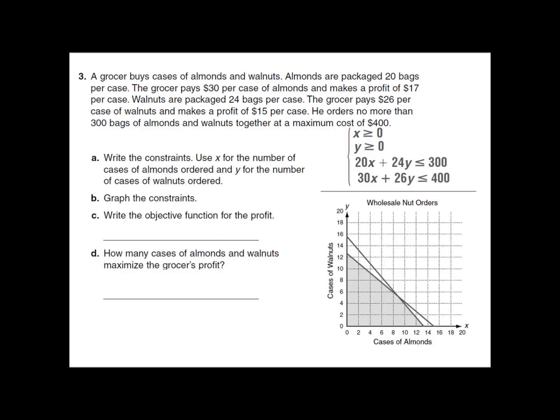Part C says to write the objective function for profit. Any businessman's objective is to maximize his profits. He makes $17 per case of almonds and $15 per case of walnuts, so we want to maximize that. Our vertices are the corners: (0, 0) — probably not going to maximize profit by ordering nothing — and the corner out in the middle is actually (9, 5). We have a vertex at (0, 13.33) and (12.5, 0).